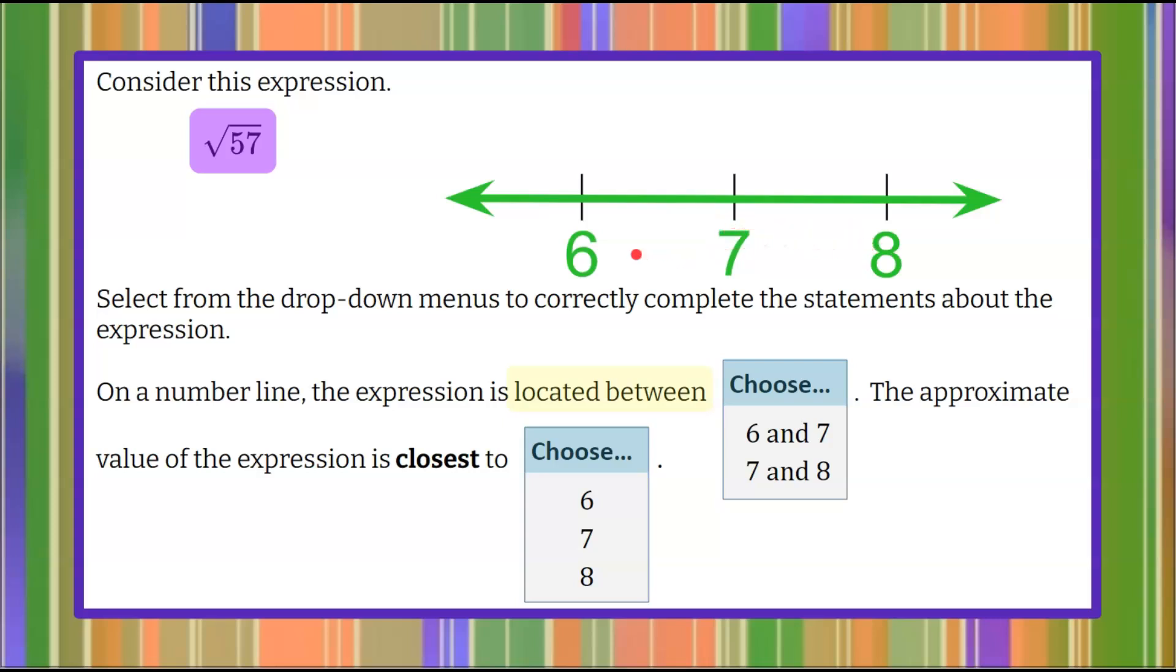And we're going to change this into a number line. Instead of using the integers 6, 7, and 8 we're going to consider the square roots. So the square root of 36 is 6. The square root of 49 is 7. And the square root of 64 is 8.